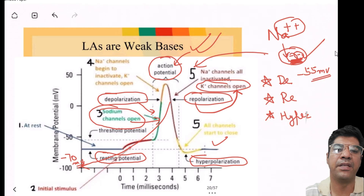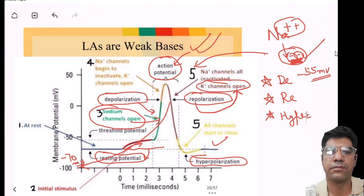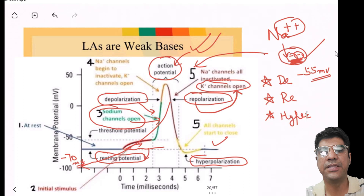If the stimulus does not reach the threshold of around minus 55 millivolts, the depolarization is insufficient to initiate an action potential. The neuron remains in the resting state. If the depolarization does not reach the threshold, no action potential is generated, preventing the transmission of the signal.